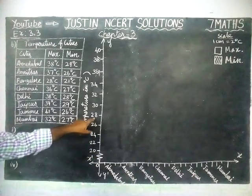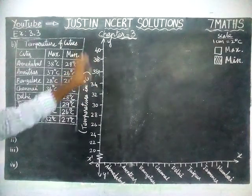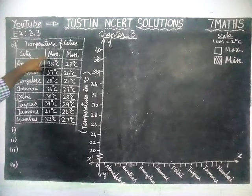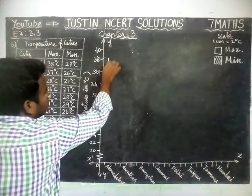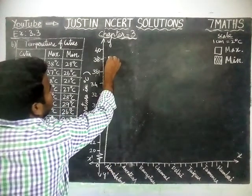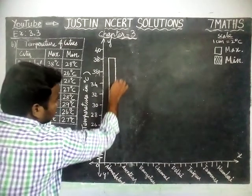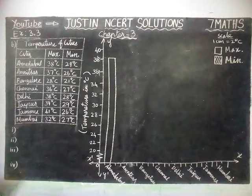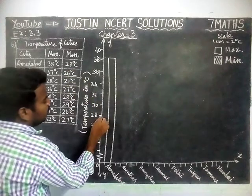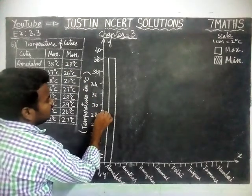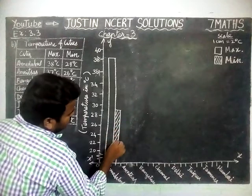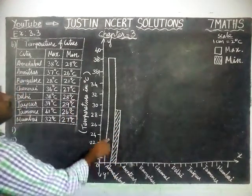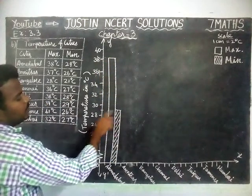We start from 20: 20, 22, 24, 26, 28, 30, 32, 34, 36, 38, and 40. Now we draw for Ahmedabad. Maximum temperature is 38°C — 38 is here, so we draw the empty bar to 38°C. Minimum temperature is 29°C. We don't have 29 exactly, so in between 28 and 30 we draw a line at 29. To show the difference we use the cross-line bar. Maximum is 38°C and minimum is 29°C.